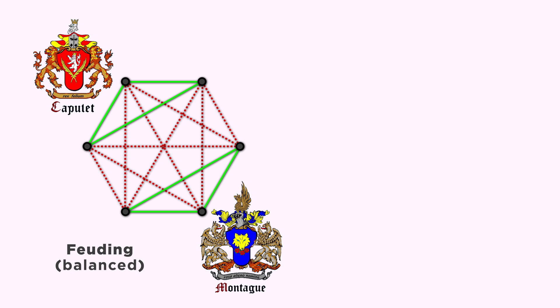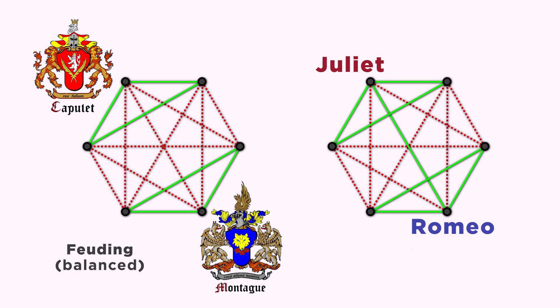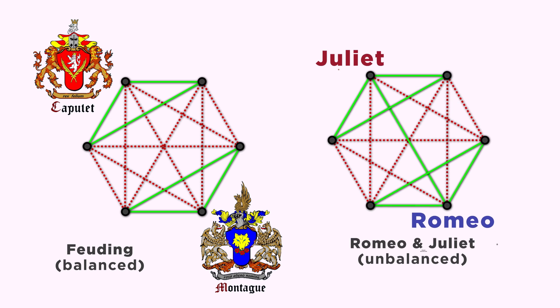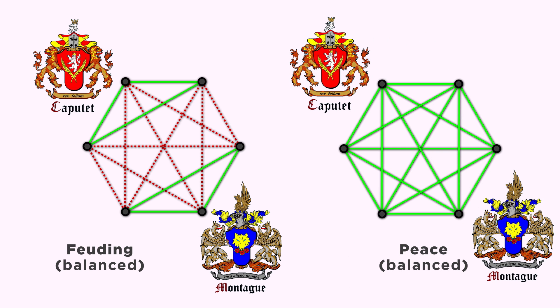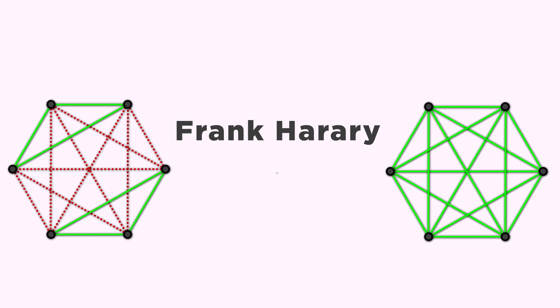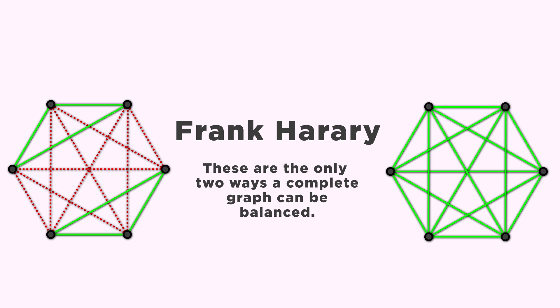For example, things were unpleasant when the Montagues and the Capulets were perpetually feuding, but it wasn't until Romeo and Juliet fell in love, which sent their network out of balance, that things began to change. They were balanced as two rival groups, and then again at the end with everyone at peace, but not while Romeo and Juliet were crossing group lines. In fact, in 1953, Frank Harari proved that these are the only two ways a complete graph can be balanced. In other words, in a complete balanced graph, either everyone is friends with everyone else, or the vertices of the graph split into two groups, where each individual is friends with each other member of its group, and enemies with each member of the other group. That's it. Those are all the complete balanced graphs.